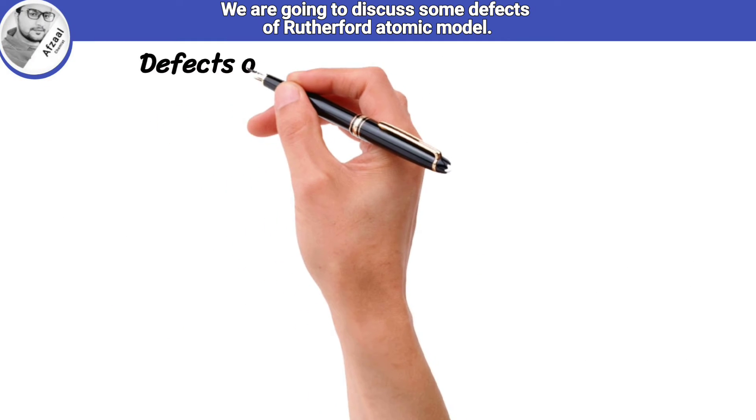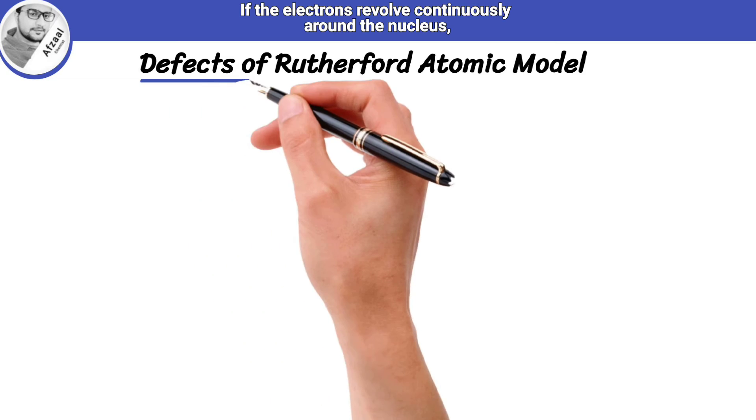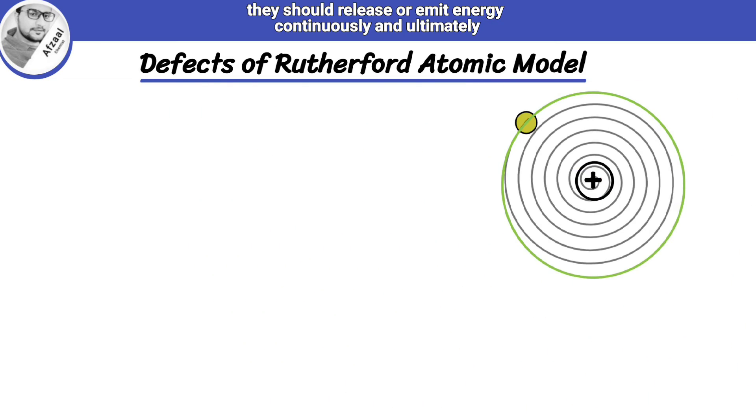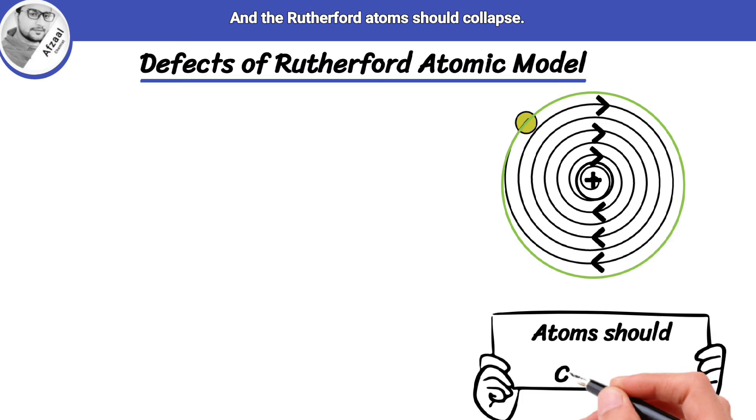We are going to discuss some defects of Rutherford atomic model. If the electrons revolve continuously around the nucleus, they should release, or emit, energy continuously and ultimately, fall into the nucleus, and the Rutherford atom should collapse.